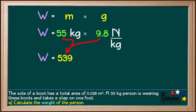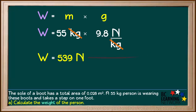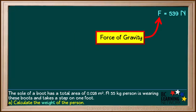Multiplying 55 times 9.8 gives us 539. The unit kilograms cancels out, leaving us with newtons as the unit for our answer. So the weight, or force of gravity on the person, is 539 newtons. We'll note that weight is the same as the force of gravity acting on a person, so we can replace W with F for force, and state that the force of gravity acting on the person is 539 newtons.